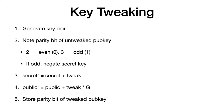In order to tweak your secret key, you take the original untweaked secret key — which may potentially already be negated — and then you add the tweak to it. The tweak is simply a hash, interpreted as a big integer. For the public key, you do essentially the same thing: you look at the point on the elliptic curve and add the tweak multiplied by the generator point of secp256k1.